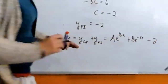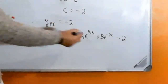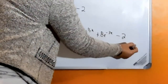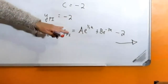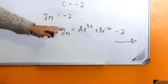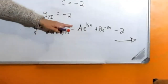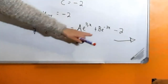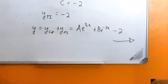The full general solution is the complementary function plus minus two. Remember that is your general solution. If you have initial conditions — you'll need two of them — you can then find the values for A and B in order to get your particular solution.